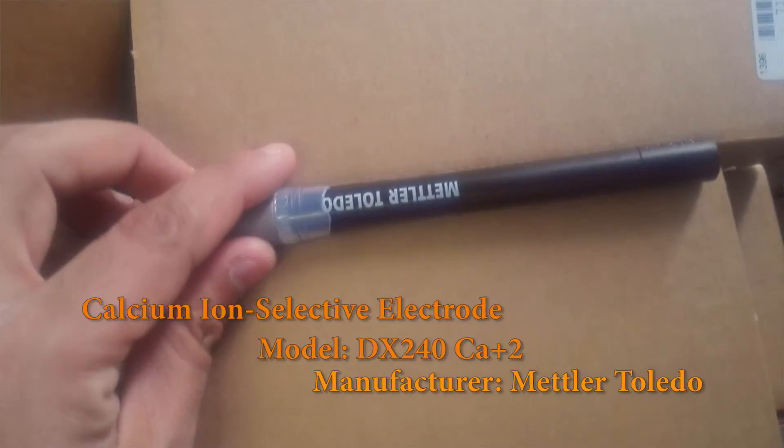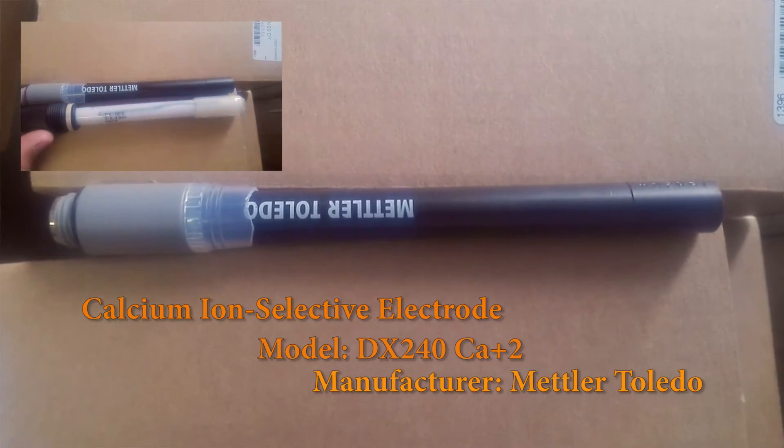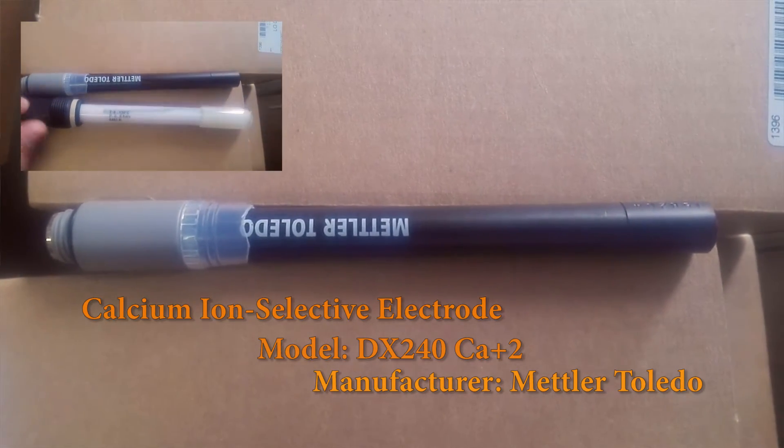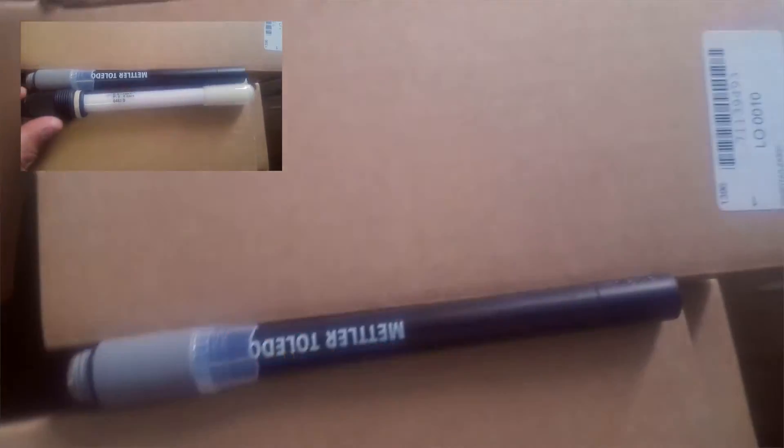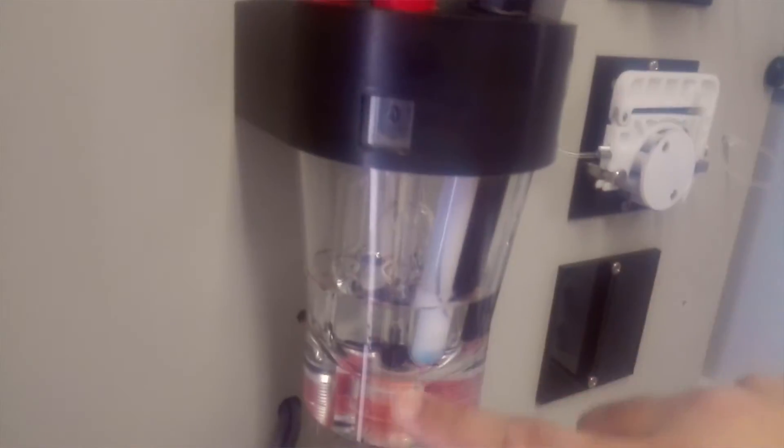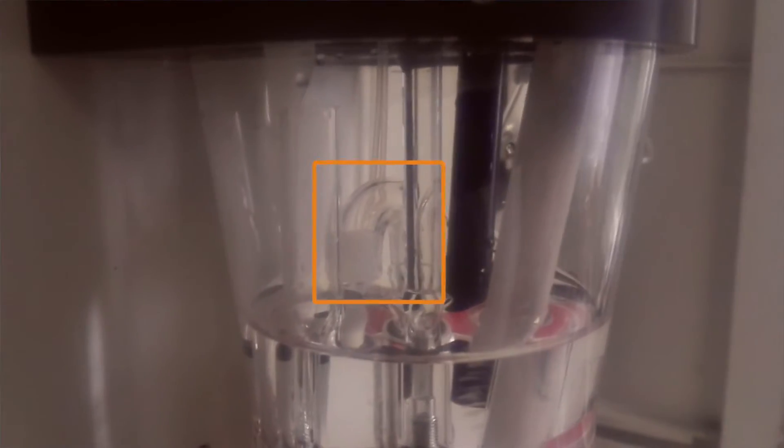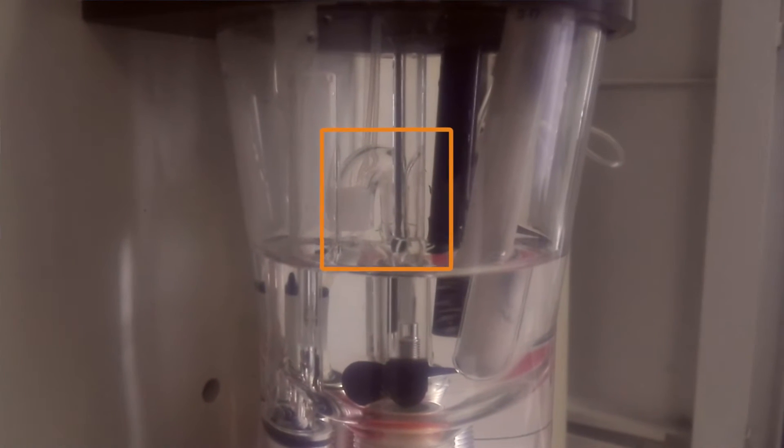The second electrode is a calcium ion selective electrode manufactured by Mettler Toledo, model DX240. This is the sprinkler to rinse the reactor chamber and both electrodes before and after analysis. You can use demineralized water or deionized water for this purpose. On the back side of the reactor chamber, this is the overflow tube. Beside the overflow tube, this is the siphon tube.